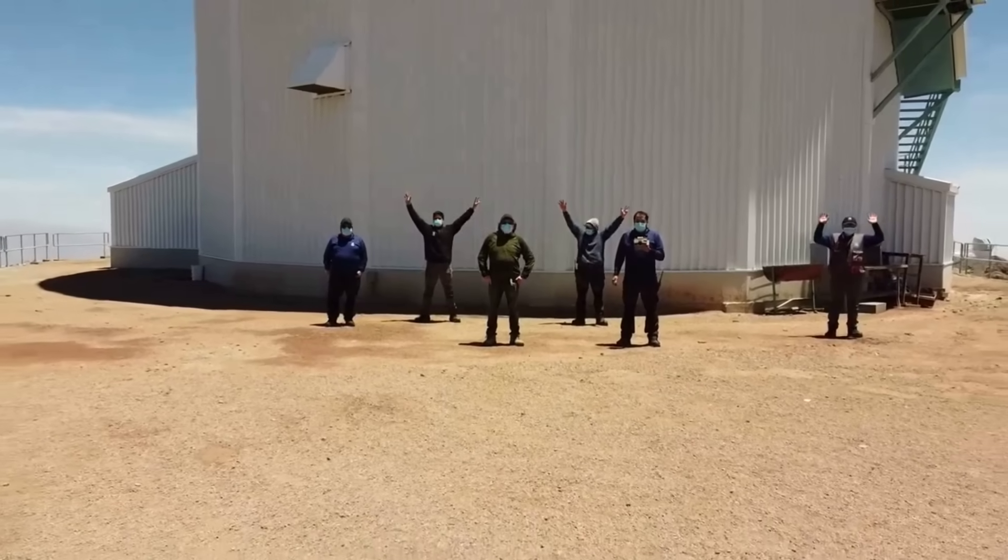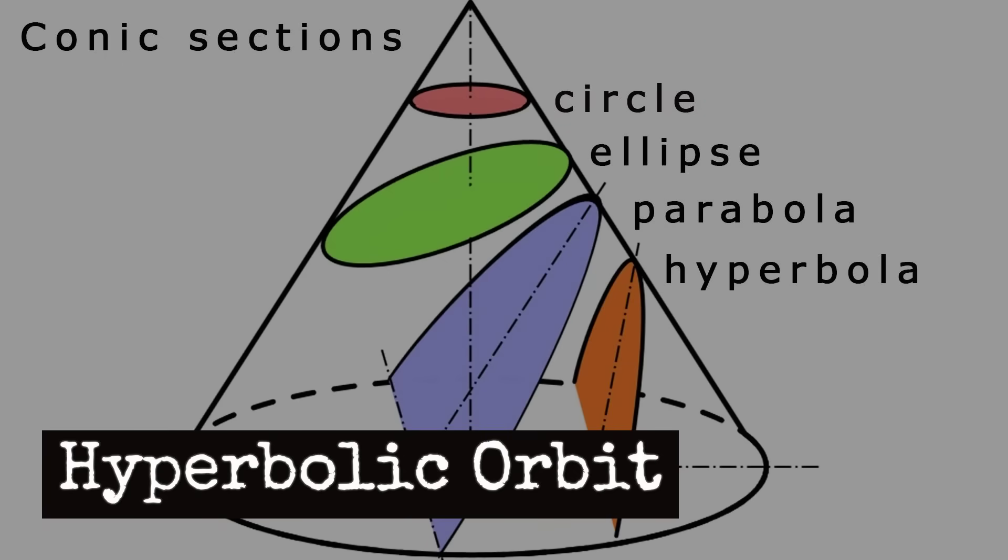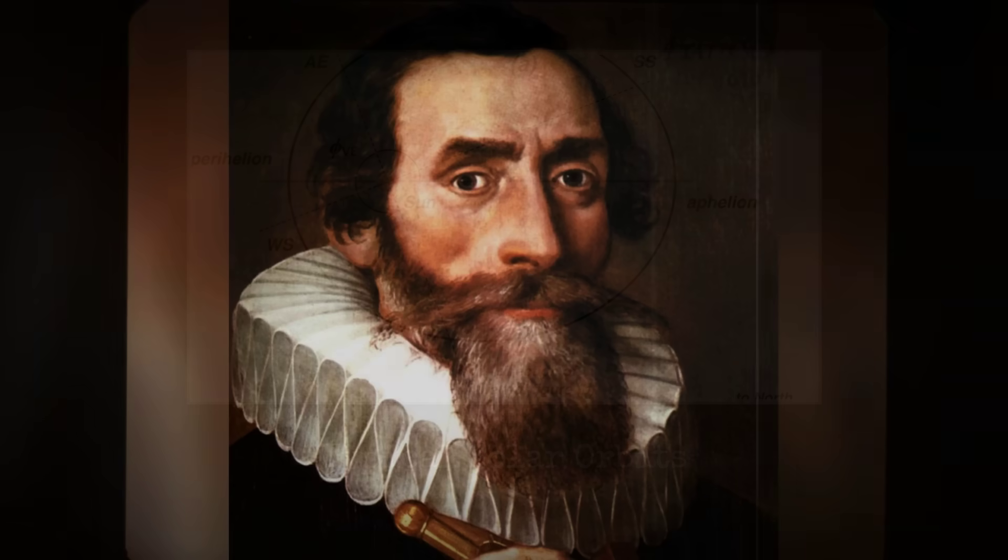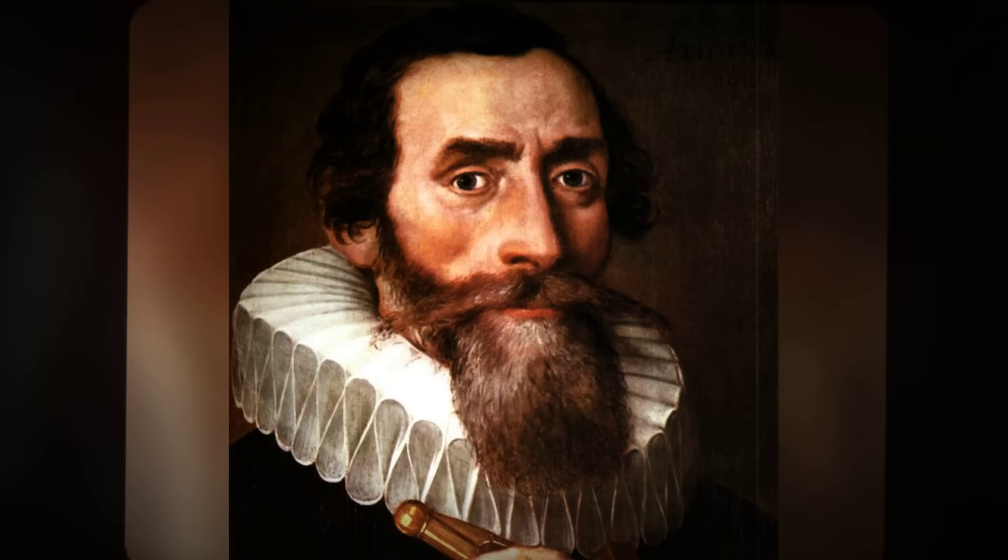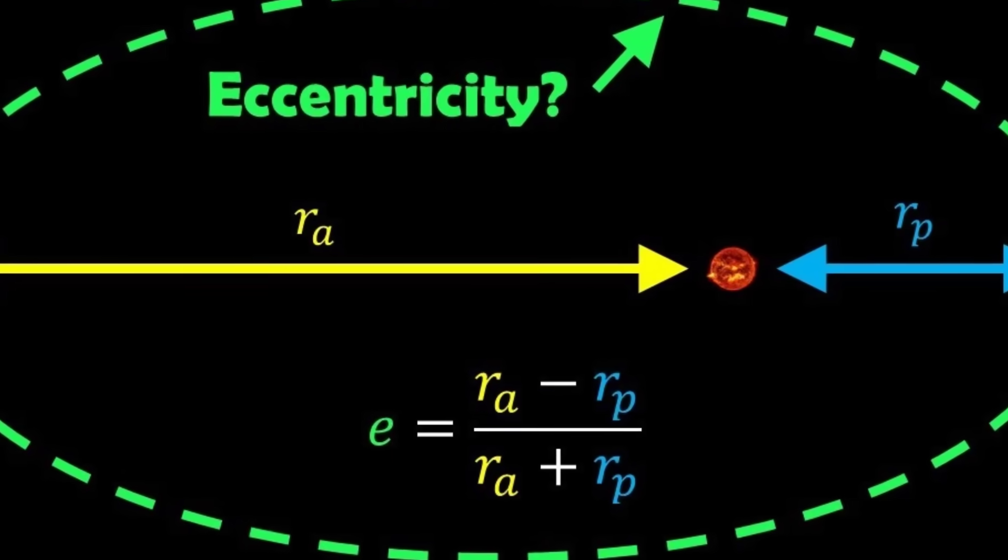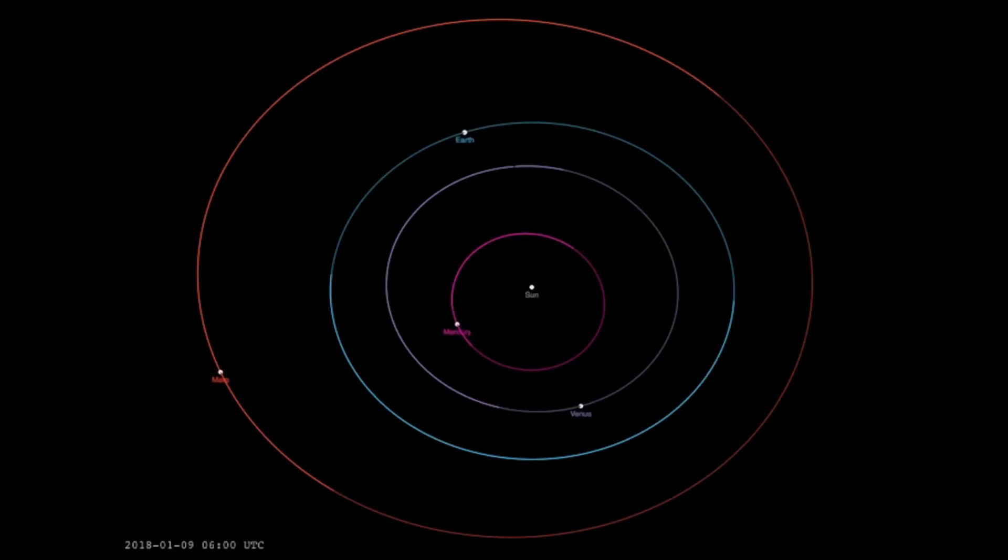Now, some of you might be wondering, what exactly makes an object interstellar, and how do we know 3I/Atlas came from outside our solar system? Simply put, it's all about orbital mechanics. Every object orbiting the sun follows an elliptical path. That's Kepler's first law. The shape of that ellipse is described by something called eccentricity. A perfect circle has an eccentricity of zero, and most planets have eccentricities close to zero.